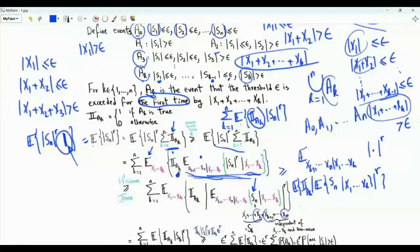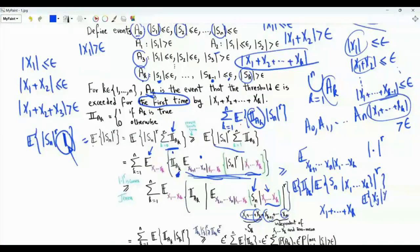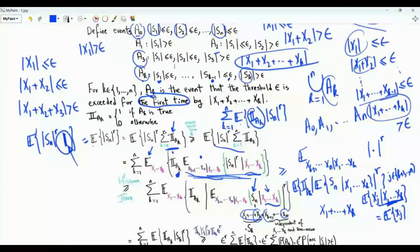S_n is the sum X_1 + X_2 + ... + X_k + X_{k+1} + ... + X_n. Since we are conditioning on X_1, ..., X_k, those are treated as constants. The conditional expectation of X_j given X_1, ..., X_k, for j in {k+1, ..., n}, equals E[X_j] by independence, which equals zero by the zero-mean assumption. Therefore, the conditional expectation of S_n given X_1, ..., X_k is simply S_k.